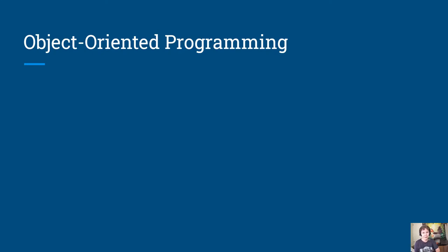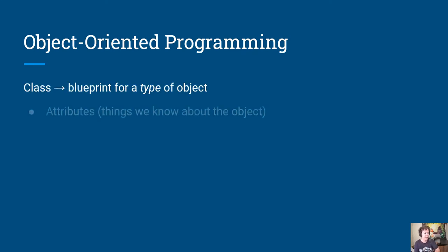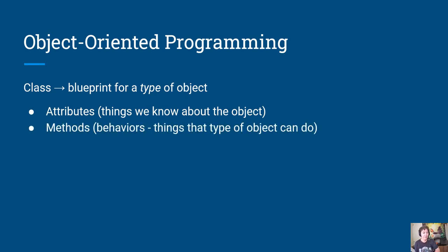So what is object-oriented programming? Object-oriented programming is a paradigm that relies on classes, which are blueprints for a type of object. Classes have attributes, which are things that we know about that type of object, and they also have methods, which you can think of as the behaviors those objects would have. Then we have an object, which is an instance of a class, so an object would have specific details filled in for its attributes.